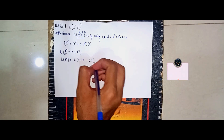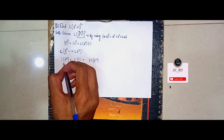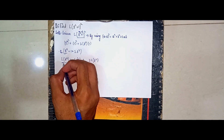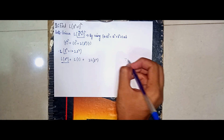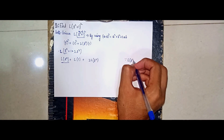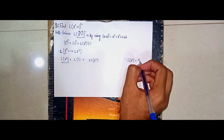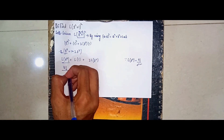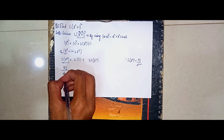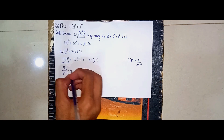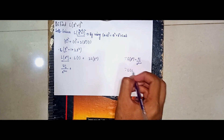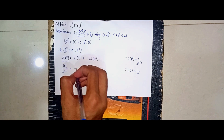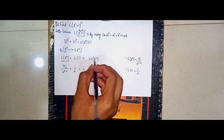We get: Laplace of t⁴, plus Laplace of 1, plus 2 times Laplace of t². I am using the formula: Laplace of tⁿ = n! / s^(n+1). So for t⁴, it becomes 4! / s^(4+1), and Laplace of 1 = 1/s.